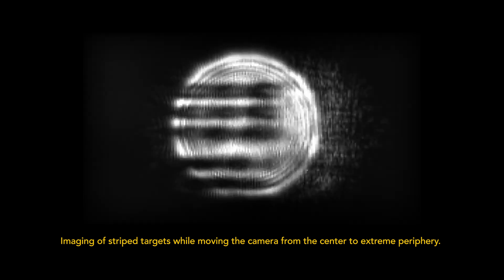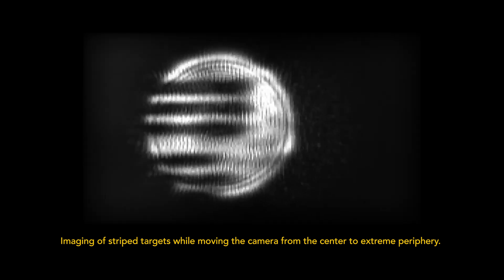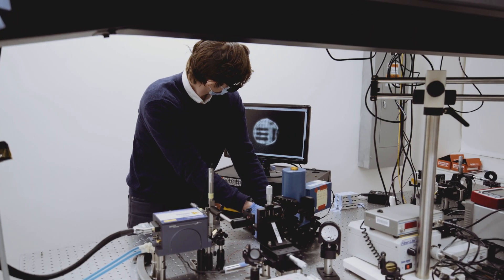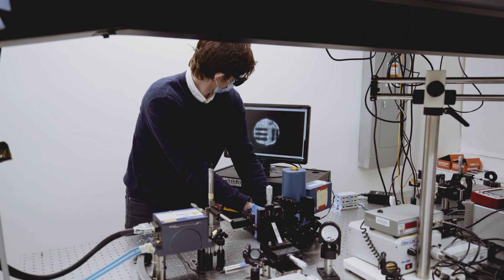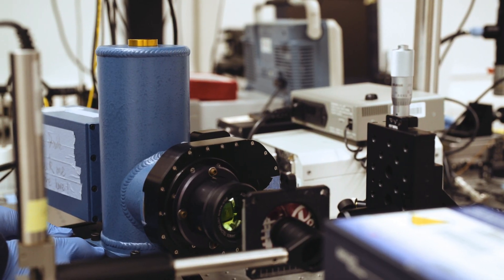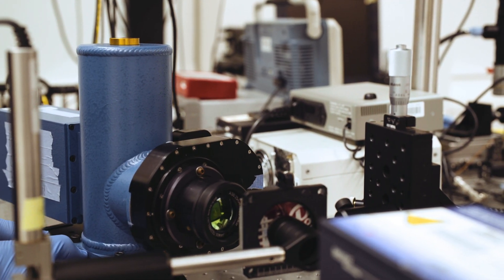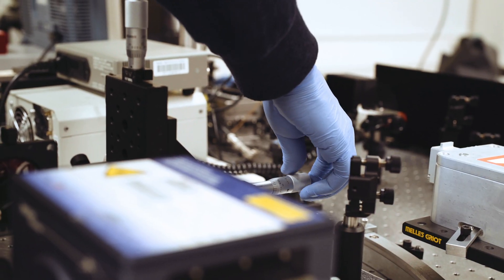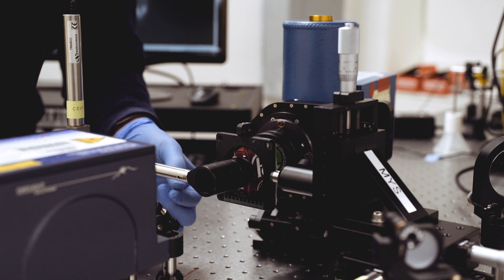Previously, scientists have designed meta-lenses that produce high-resolution and relatively wide-angle images of up to 60 degrees. To expand the field of view further would traditionally require additional optical components to correct for aberrations or blurriness, a workaround that would add bulk to the meta-lens design. But this team of researchers instead came up with a simple design that does not require additional components.